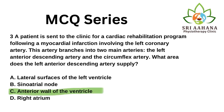The correct answer is C. The left anterior descending artery supplies the anterior ventricular wall. Option A is supplied by the circumflex artery. Options B and D are supplied by the right coronary artery.